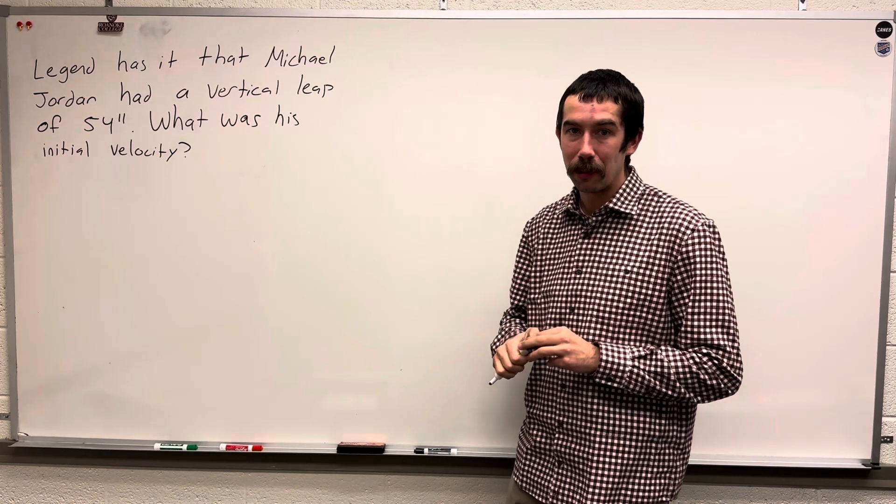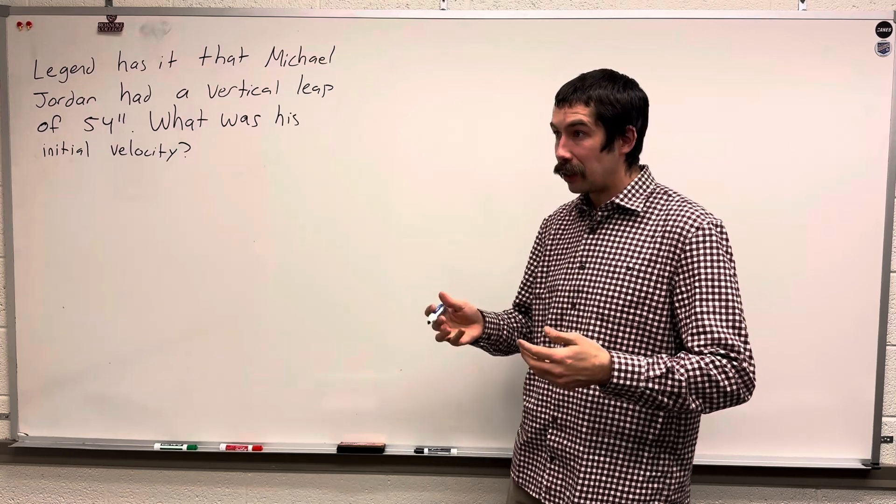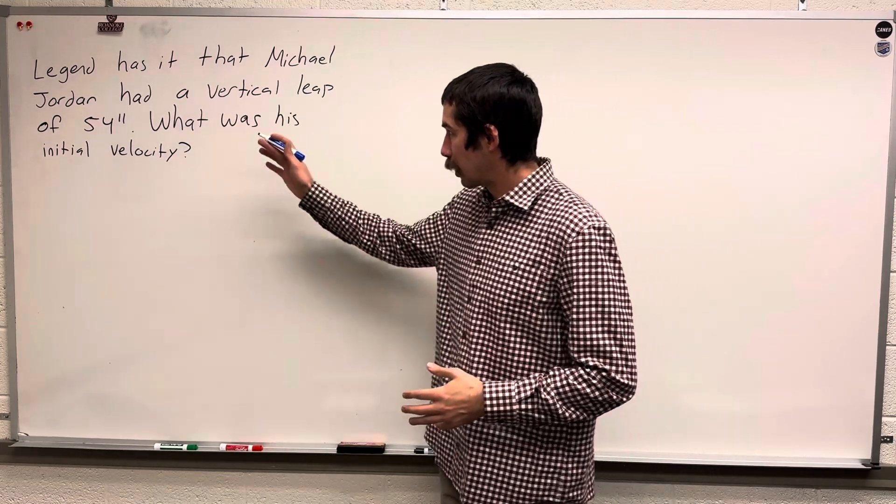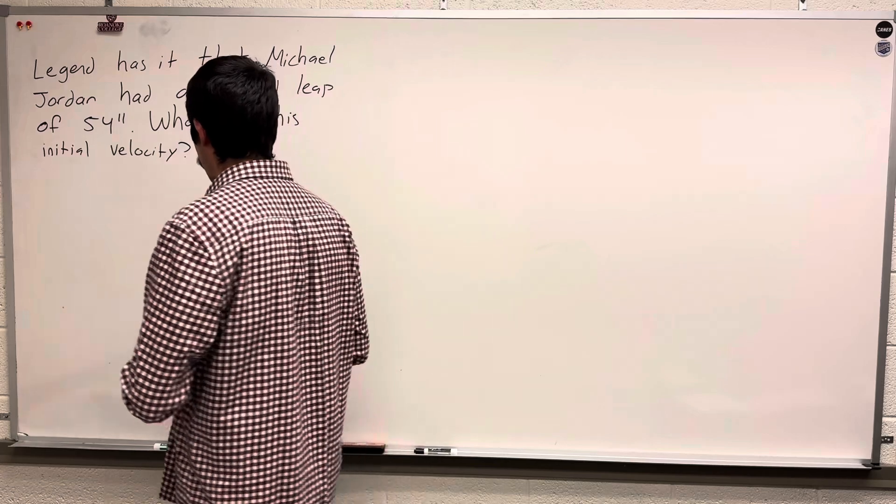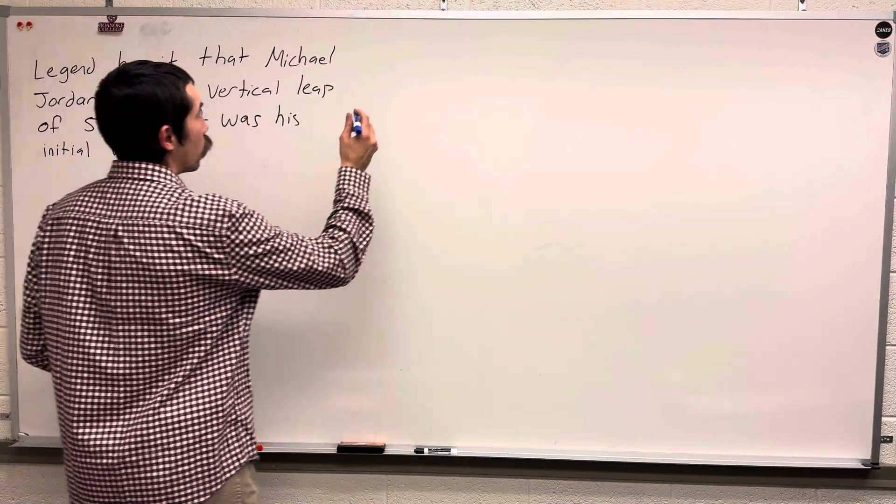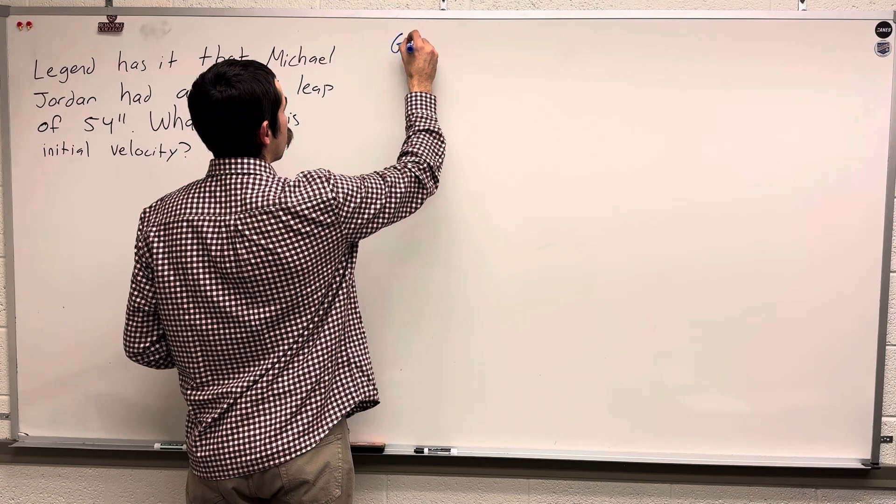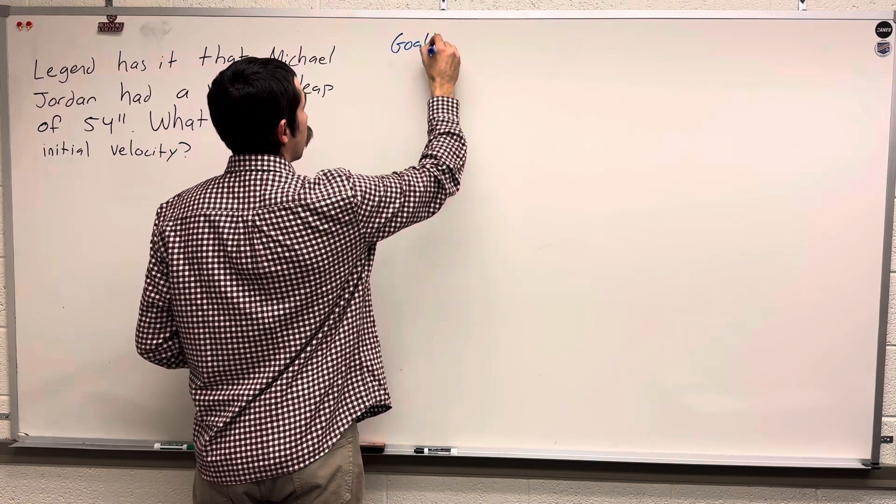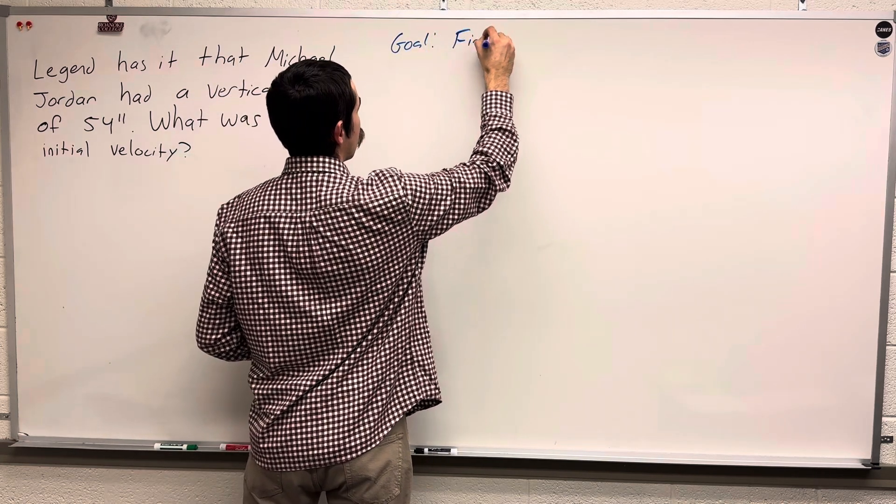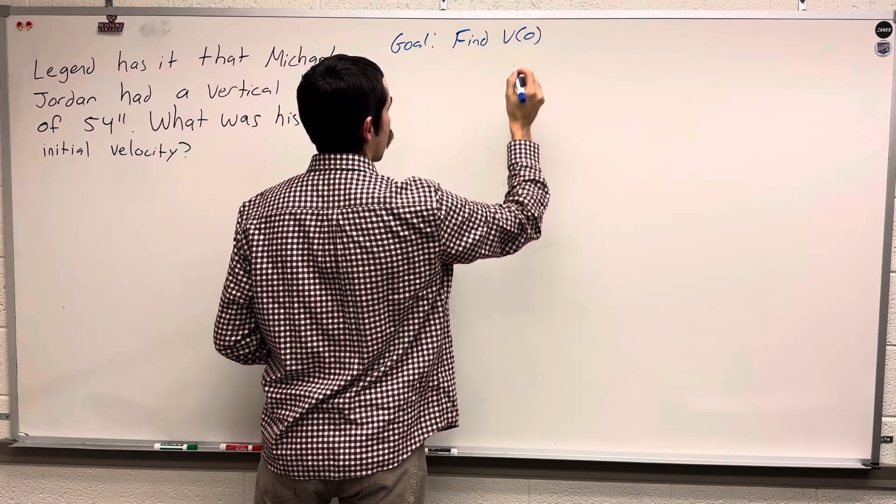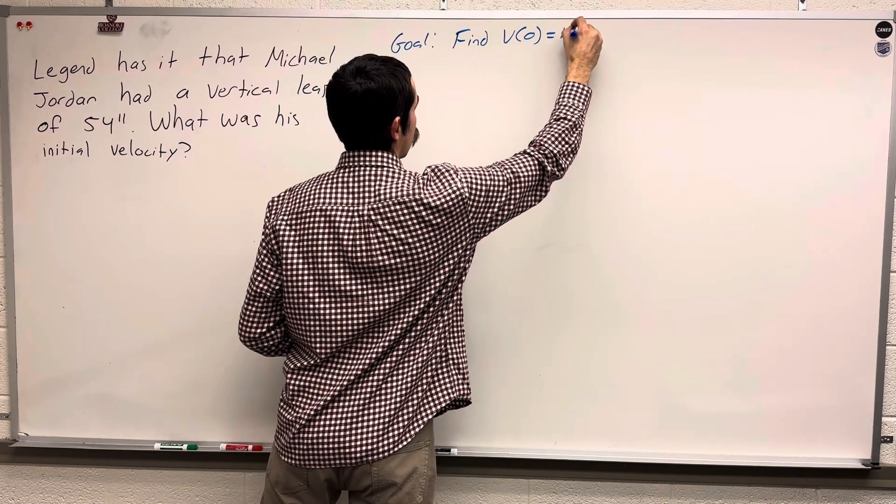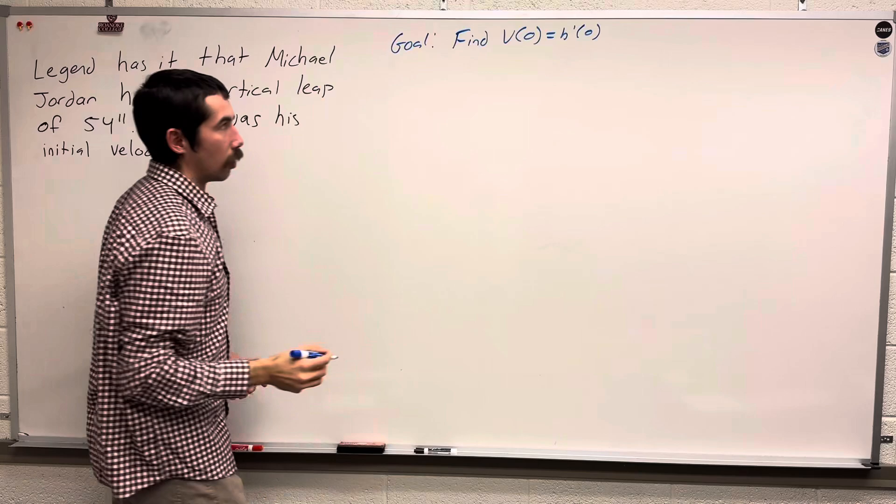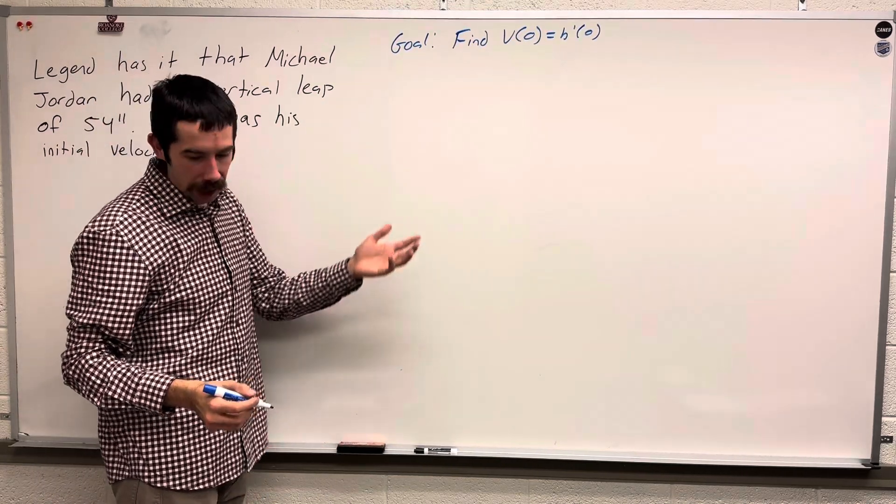So we're going to have to set up a differential equation that we're going to solve given these initial conditions. Our goal is to find our initial velocity, which is v of 0 or h prime of 0.